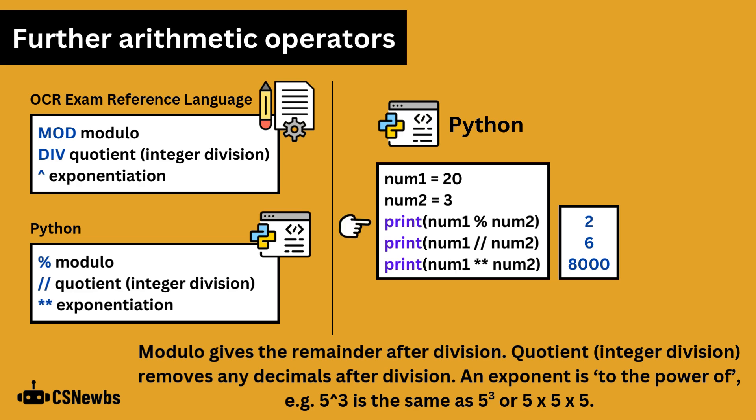Let's look at the Python examples on the right hand side here. 20 mod 3 is 2. If we look at 3 going into 20: 3, 6, 9, 12, 15, 18, 21 is over 20. So from 18 to 20, the remainder is 2.